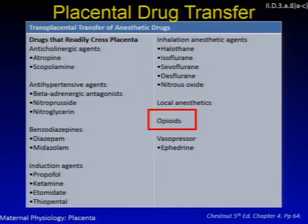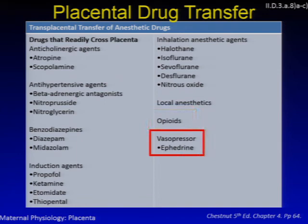Remifentanil rapidly crosses the placenta but has fewer neonatal adverse effects compared to fentanyl when administered as maternal PCA. However, remifentanil PCAs are associated with excessive maternal sedation and oxygen desaturation compared to fentanyl PCAs. Ephedrine rapidly crosses the placenta and has 10 times the lipid solubility of phenylephrine. When ephedrine is given after a spinal for cesarean delivery, it results in lower pH and base excess, higher PCO2, higher glucose, lactate, epinephrine, and norepinephrine concentrations in the fetus compared to phenylephrine. Atropine and scopolamine have placental transfer rates that correlate with their ability to cross the blood-brain barrier.